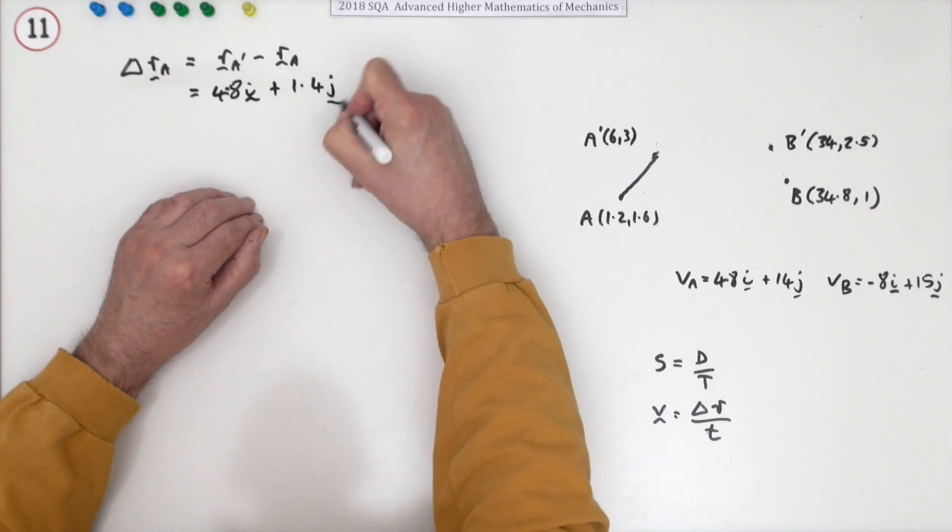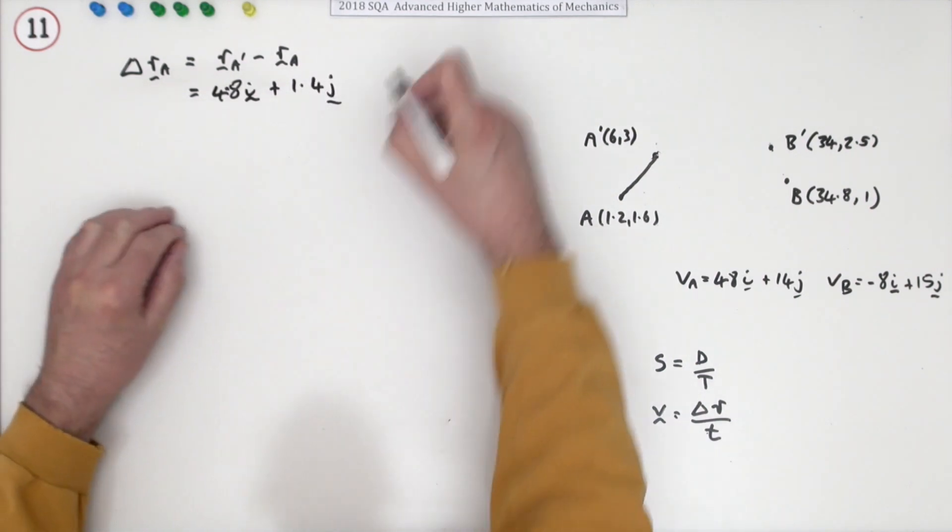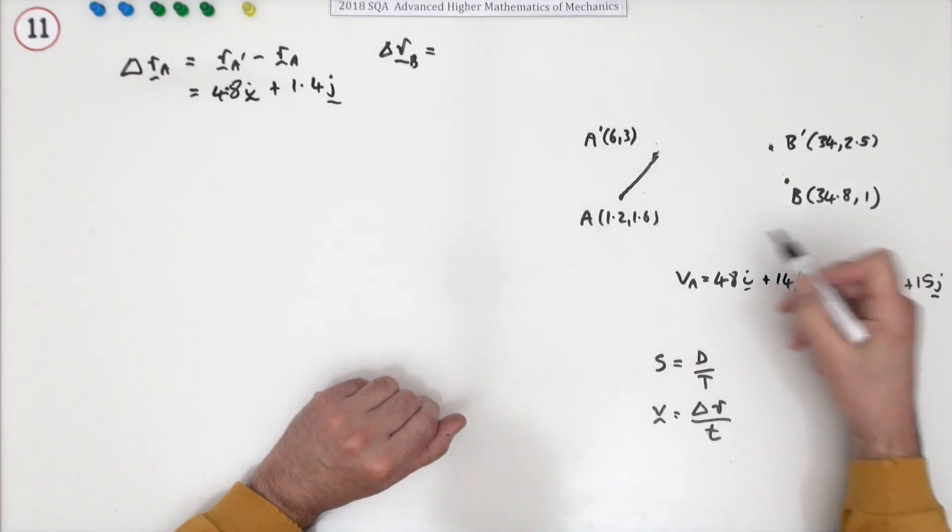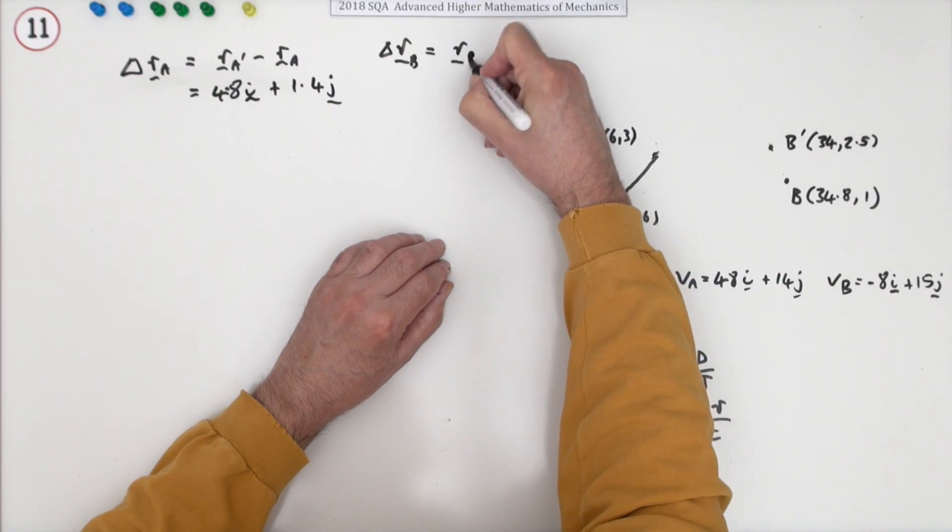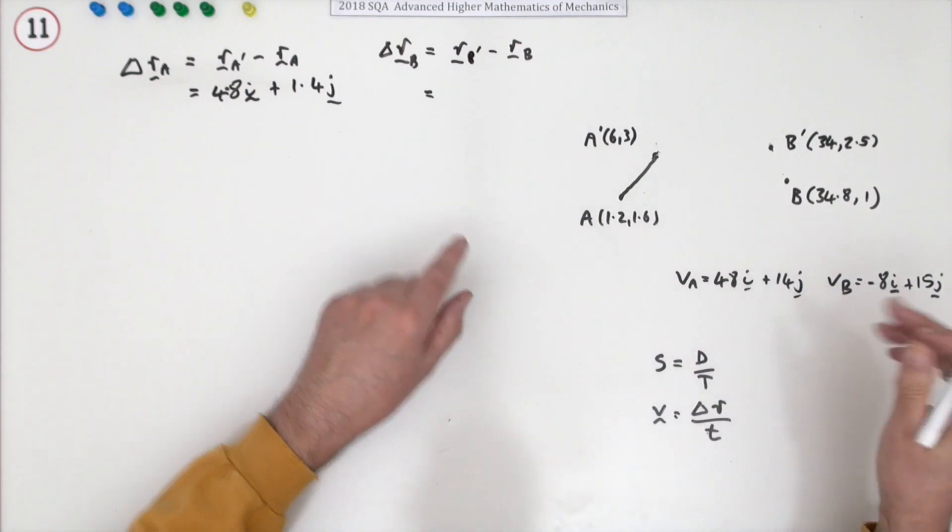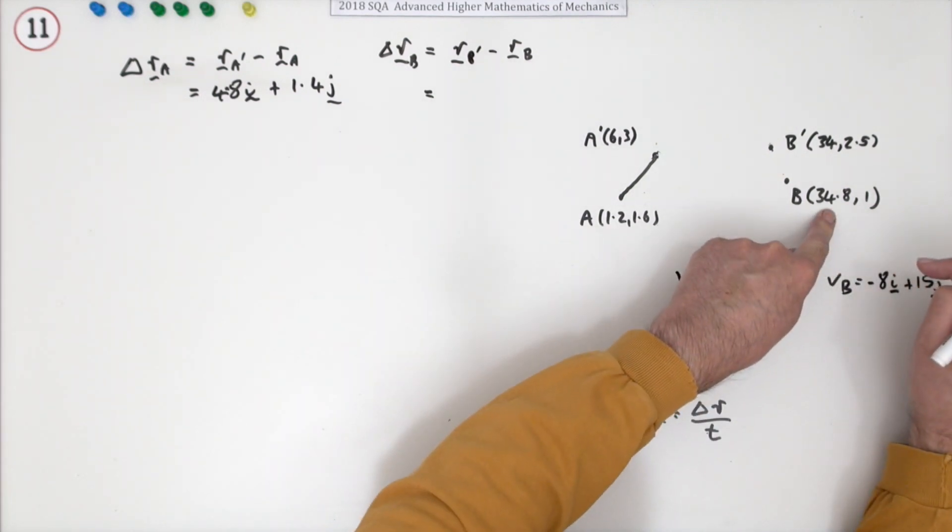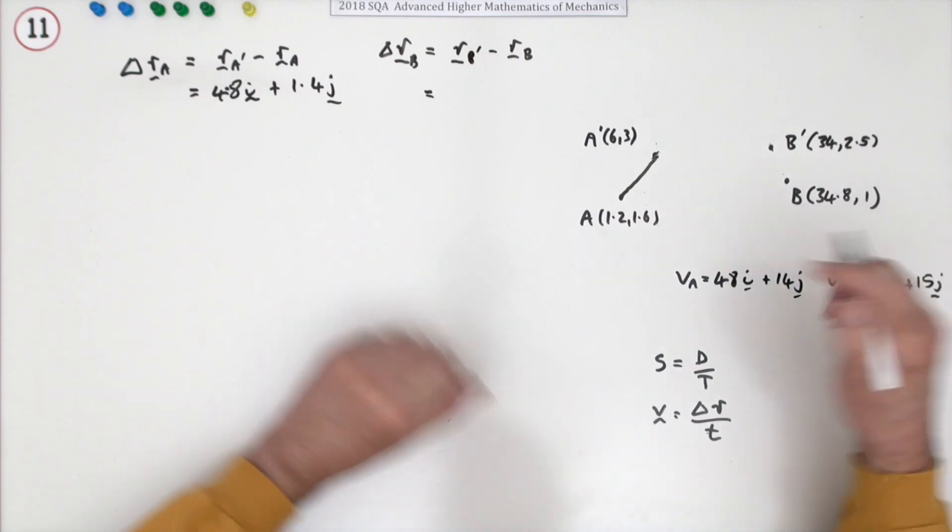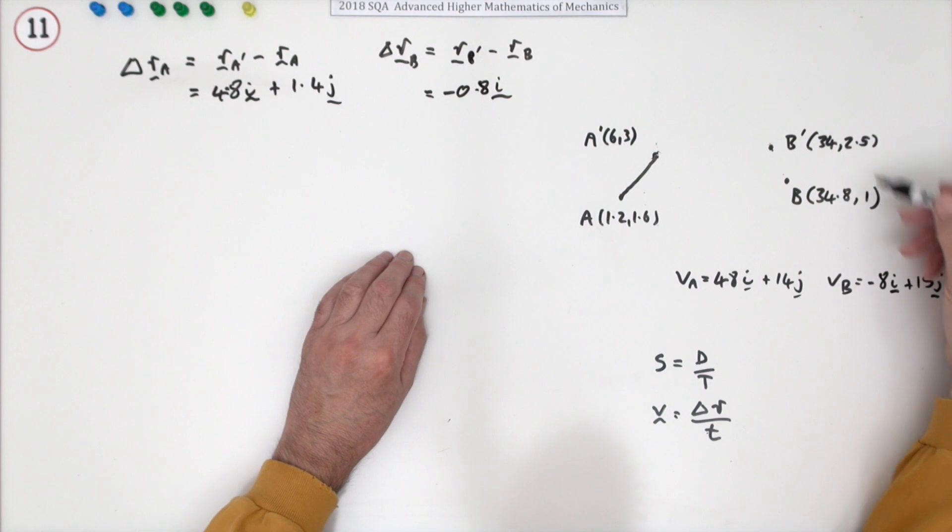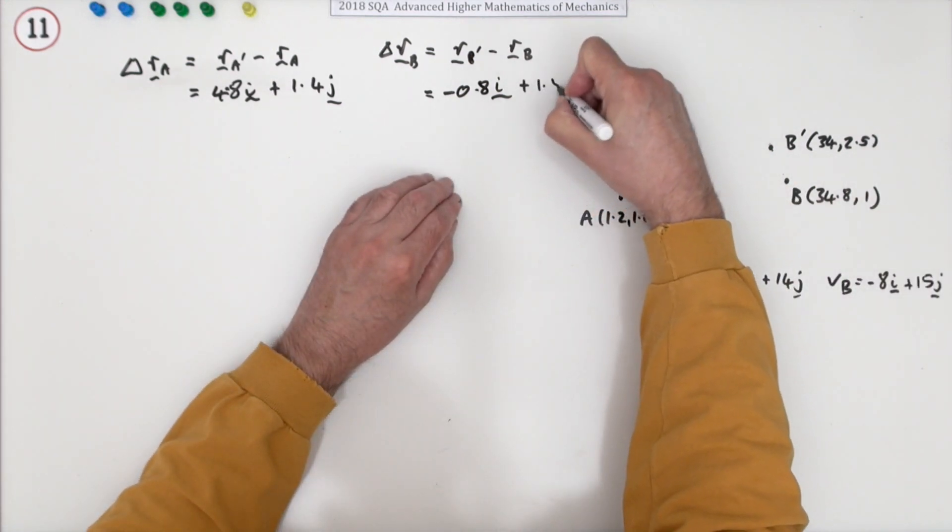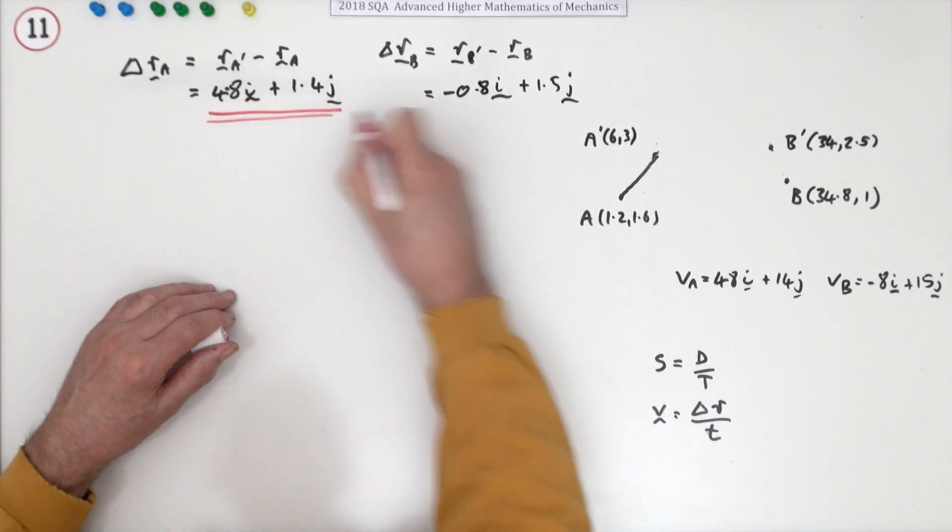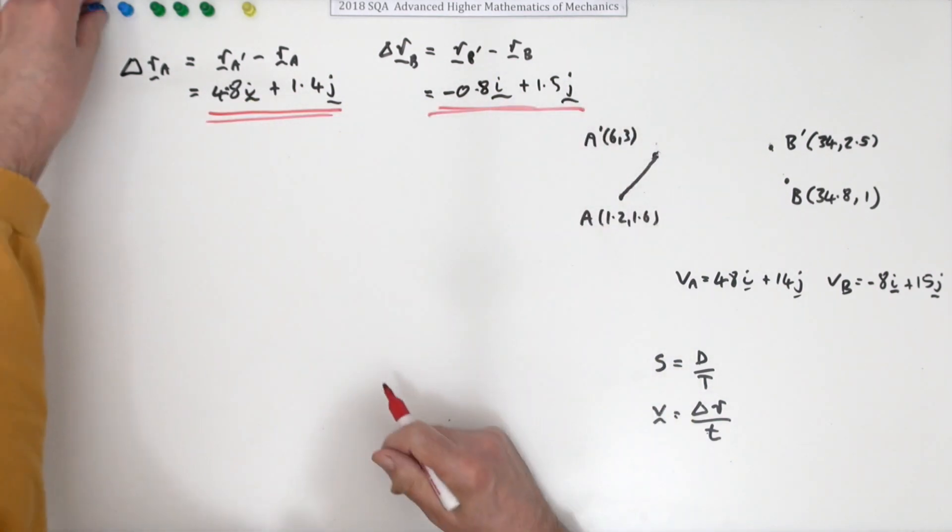Similarly for the change in the position vector of B, that would have been r_B' minus wherever it was before. Just do it by inspection: 34.8 to 34 is actually a negative 0.8i, and for the y components 1 to 2.5 so that's a plus 1.5j. Quite a bit of stuff to write down here for this first mark.